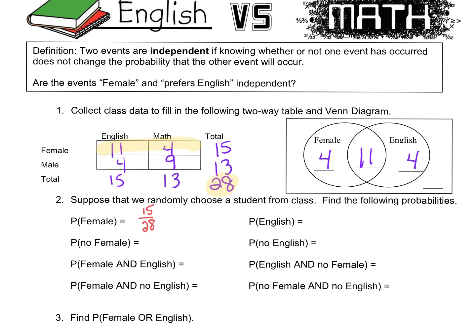I can also do the complement, P(no female), and that would mean how many males there are in the class. There are 13 males, so that would be 13 over 28. And when I say female and English, that's that Venn diagram intersection — the 11 people that are female and English. In the two-way table, it's that intersection, so it's 11 over 28. Female and not English would be this 4, and that would be 4 out of 28.